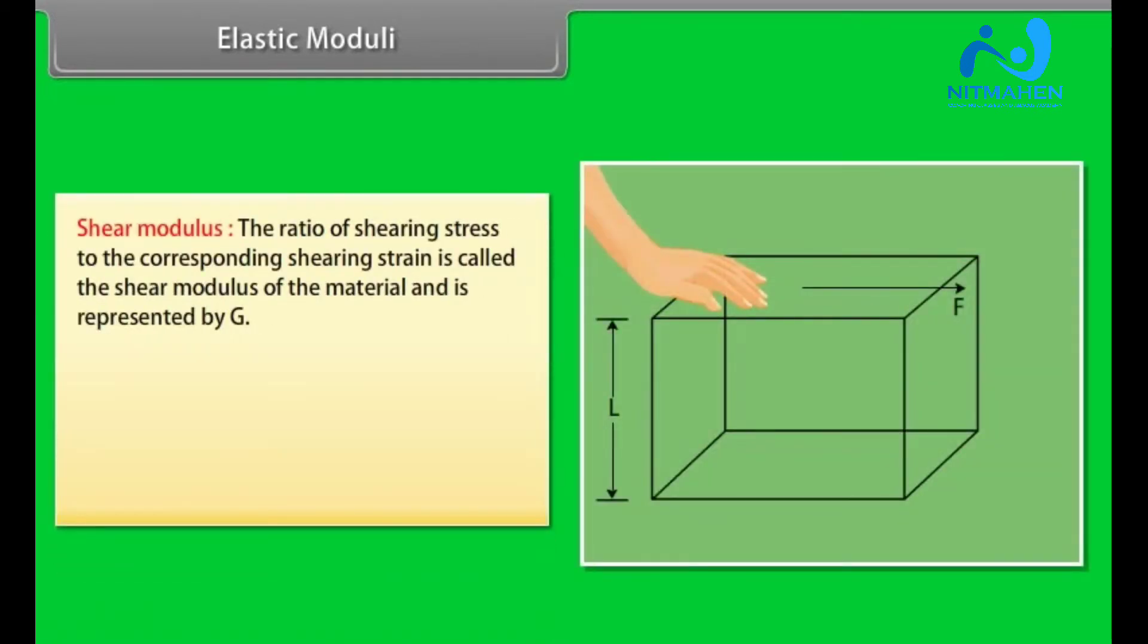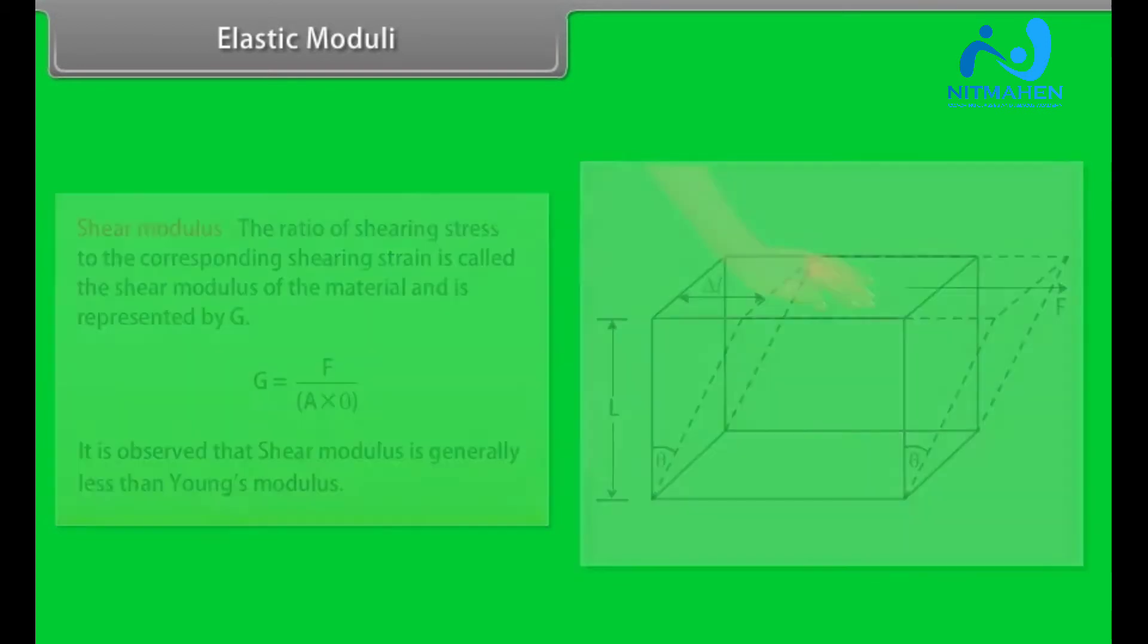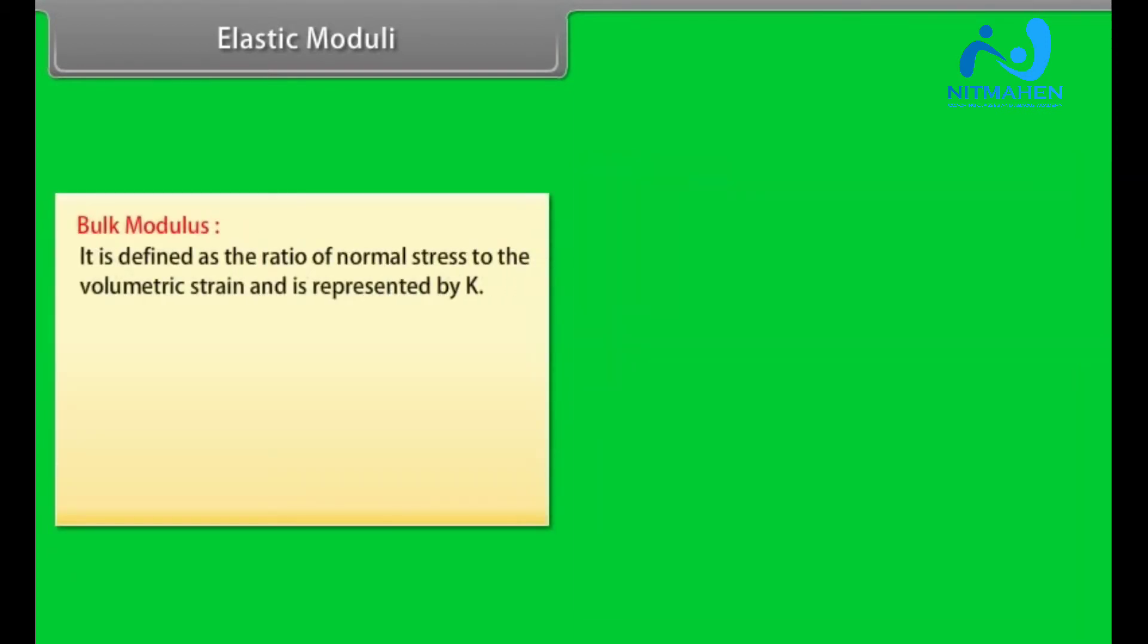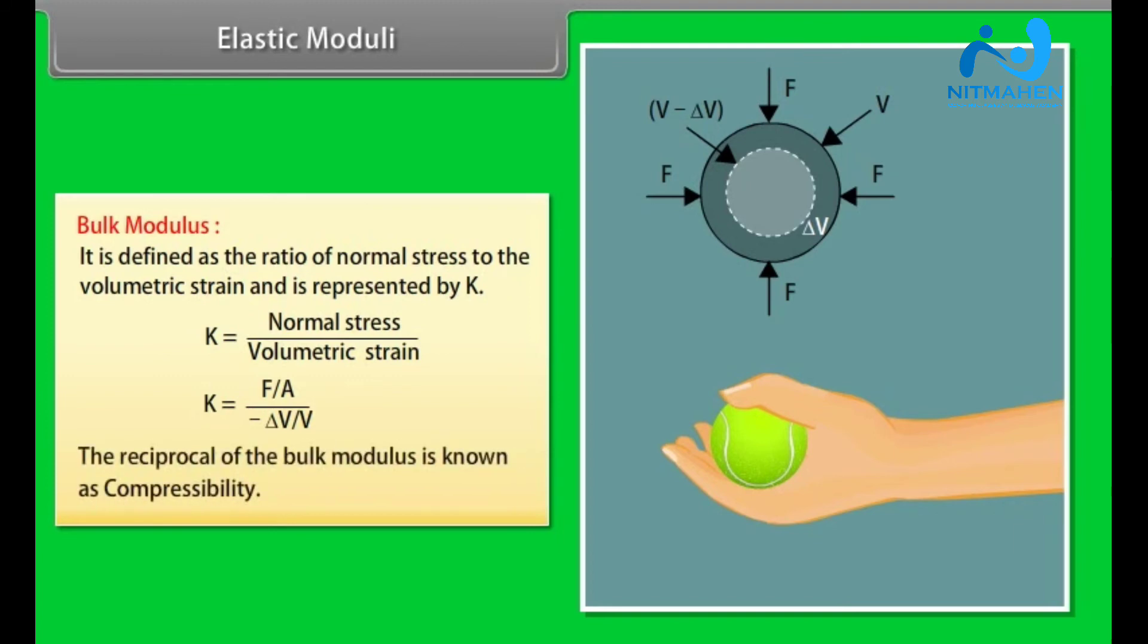The ratio of shearing stress to the corresponding shearing strain is called the shear modulus of the material and is represented by G. G is equal to F by A into θ. It is observed that the shear modulus is generally less than Young's modulus. Bulk modulus is defined as the ratio of normal stress to the volumetric strain and is represented by K. K is equal to normal stress upon volumetric strain, equal to F upon A divided by negative ΔV upon V. The reciprocal of the bulk modulus is known as compressibility.